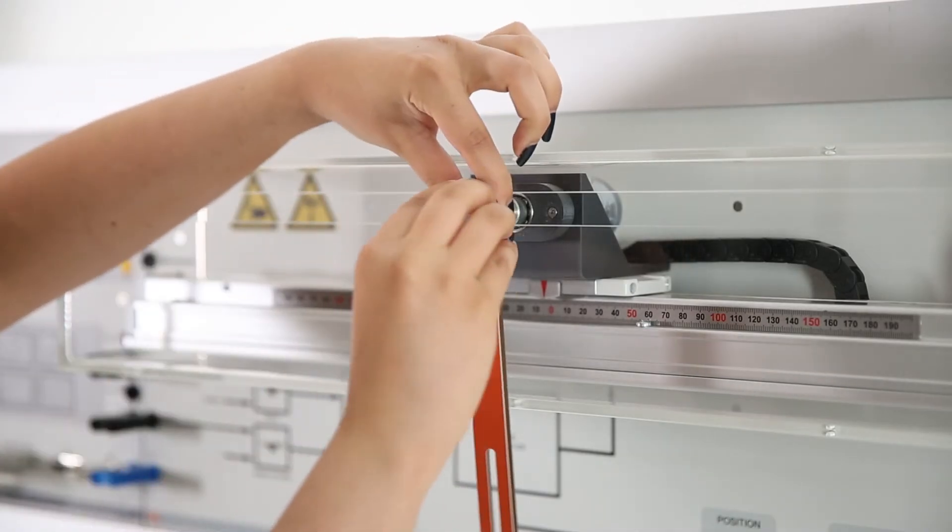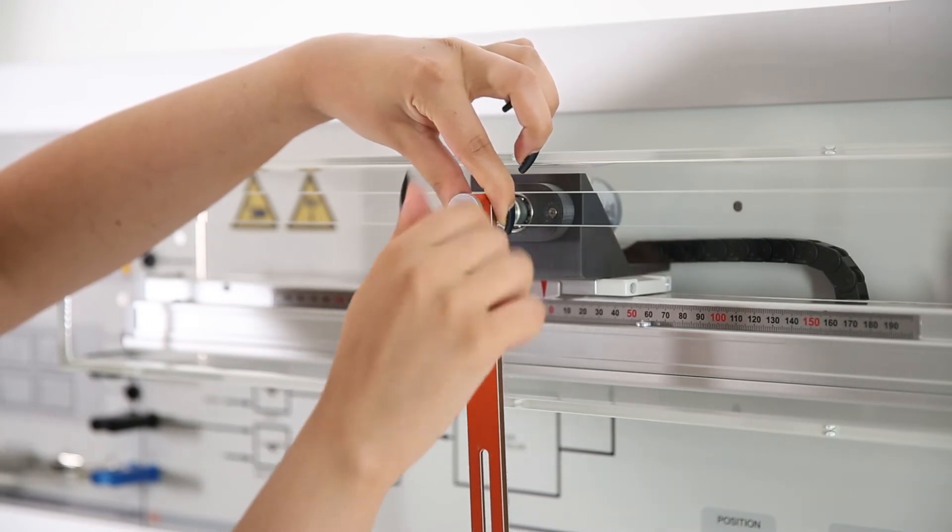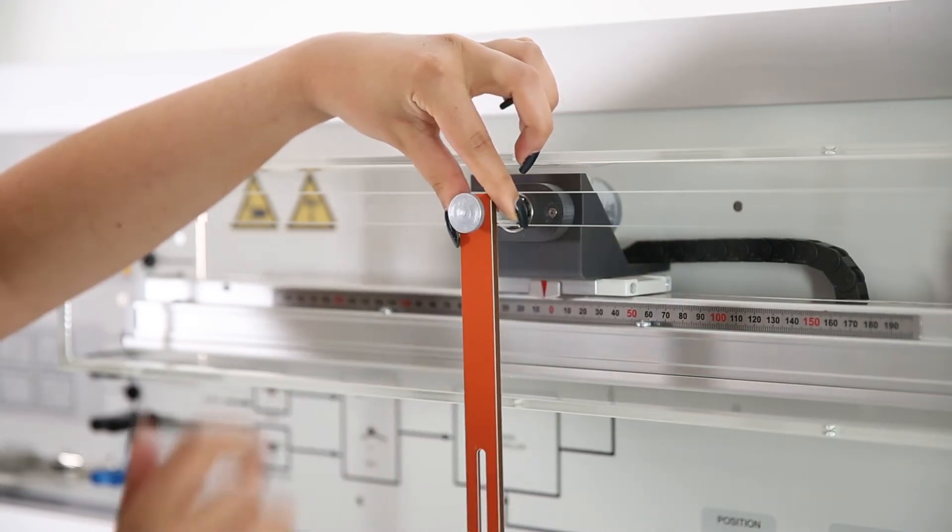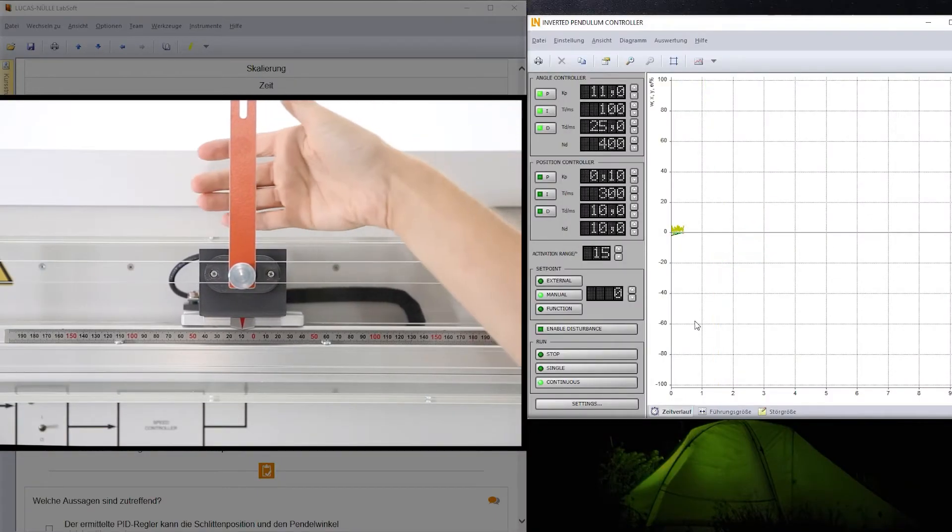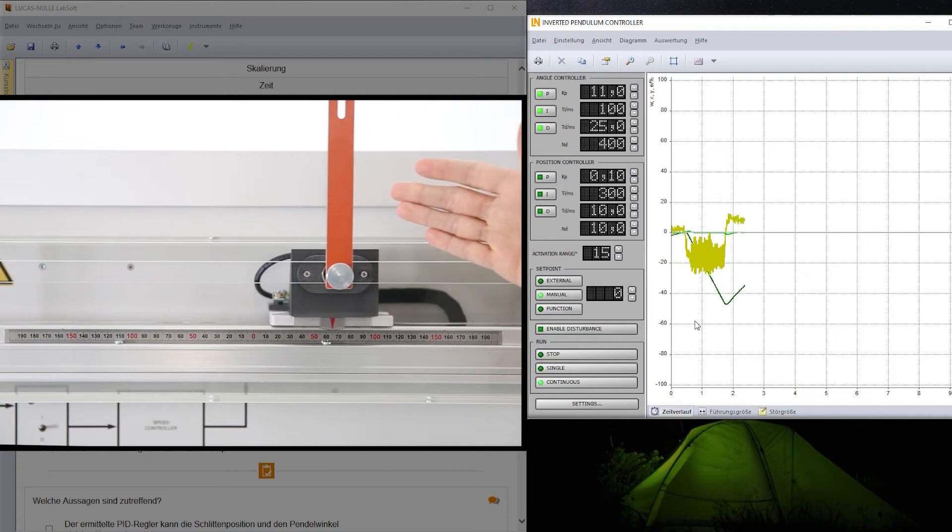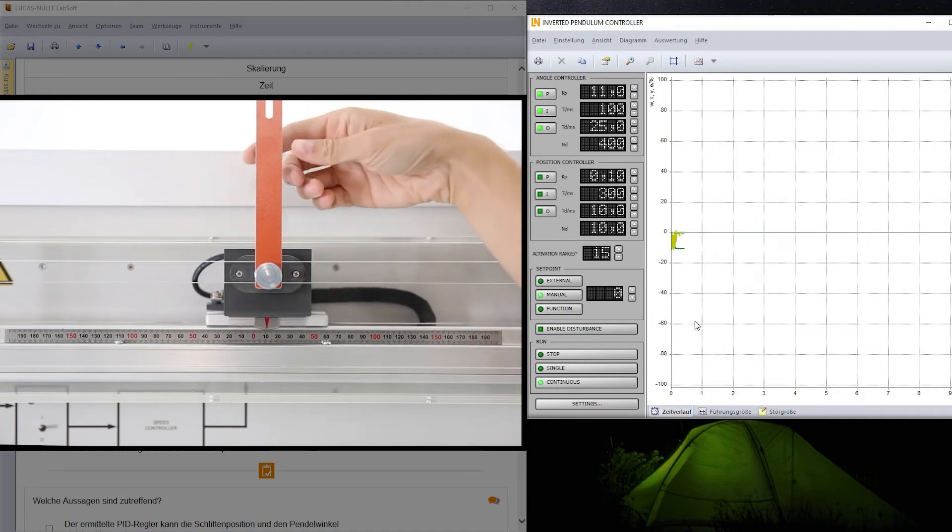By attaching a pendulum rod, an additional controlled variable is added to the system in the next step. With the assistance of the multimedia course, the student sets the PID controller for closed-loop angle control of the pendulum.